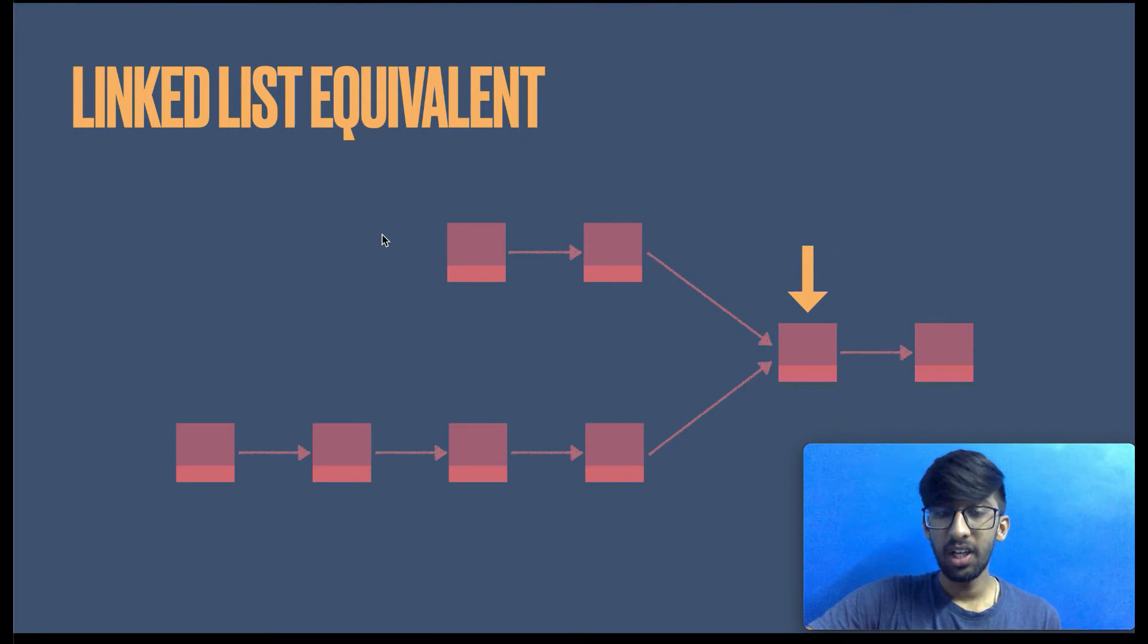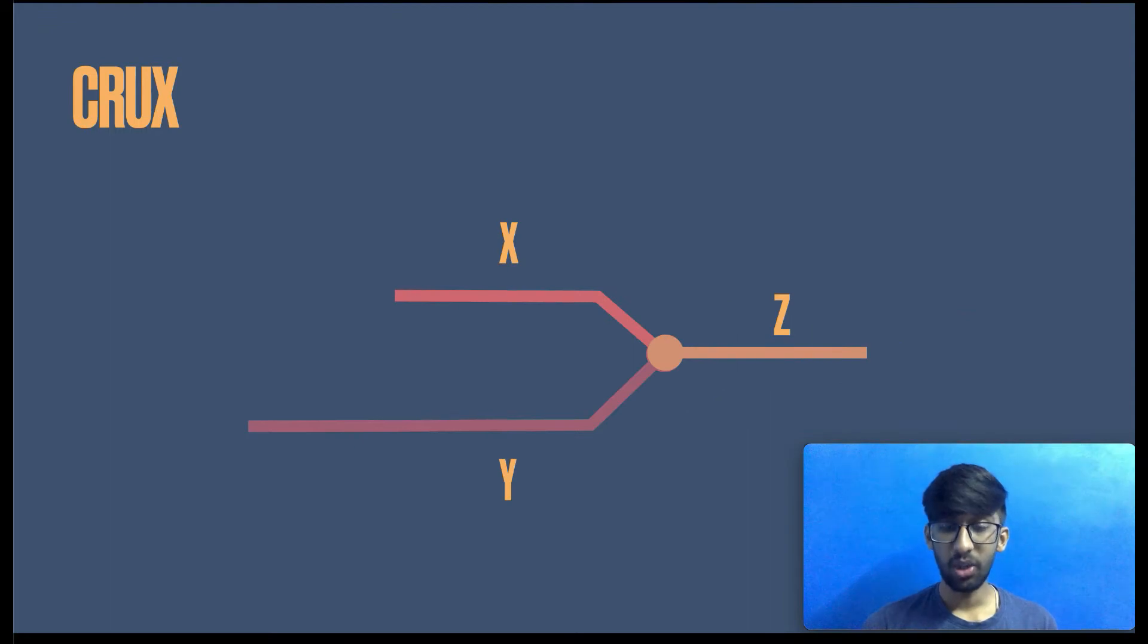We will be approaching using the two pointer approach, which is the fastest and the most efficient method to solve this. Before we see the core of this algorithm, let's use the schematic representation where we split into three different parts. The X is one of the arm of the linked list. Y is the other arm. And Z is the common section, the tail part of the two linked lists.